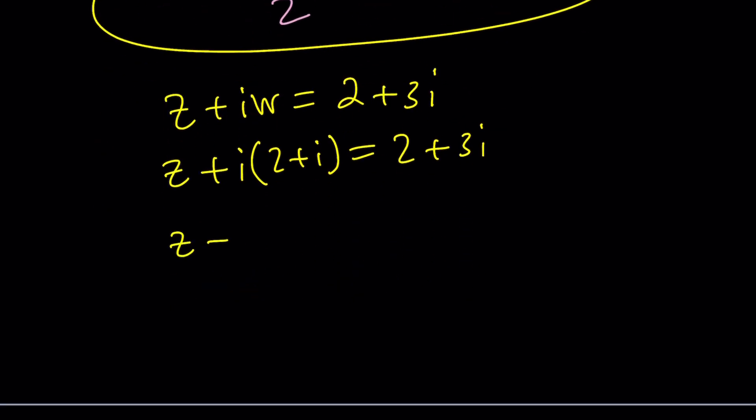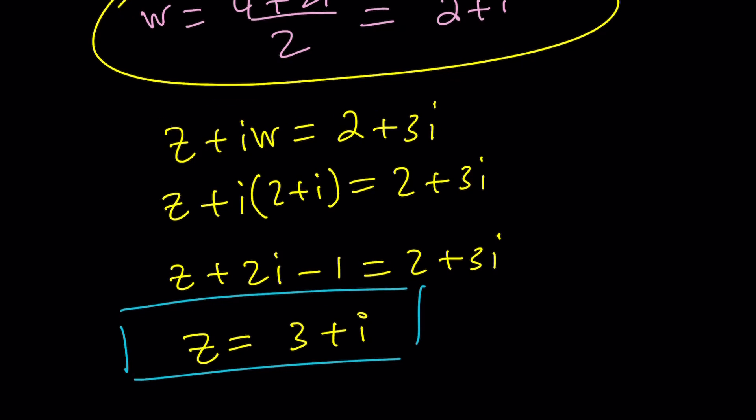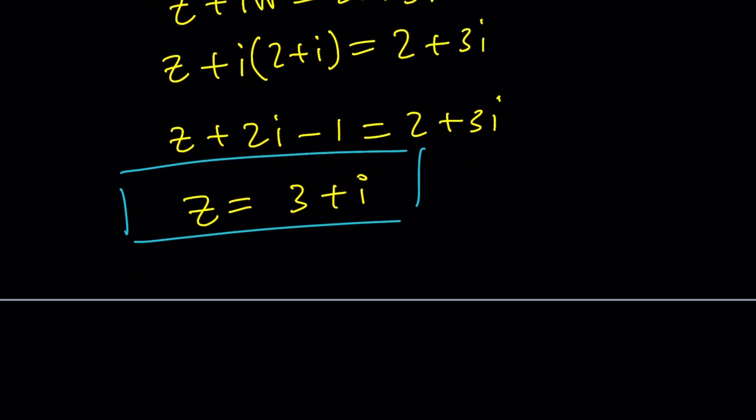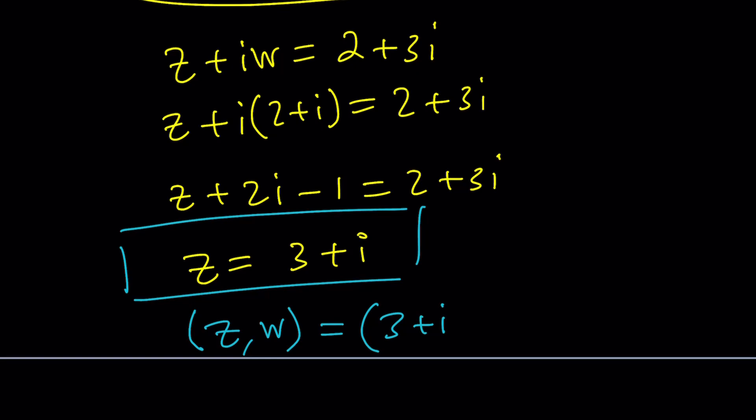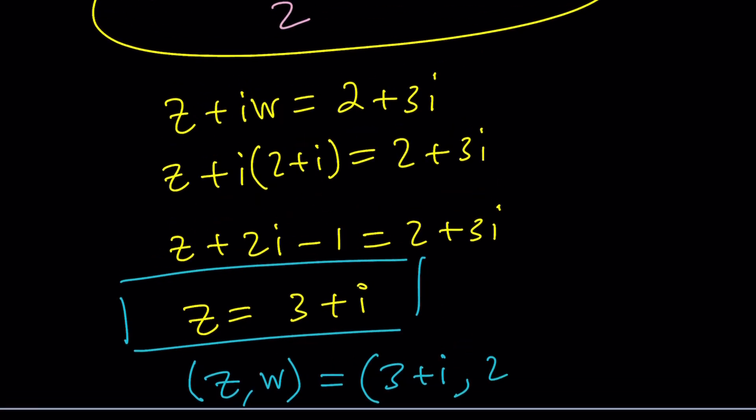Let's go ahead and simplify this. 2i plus i squared which is negative 1 equals 2 plus 3i. Now z is going to be 2 plus 1 and then 3i minus 2i is going to be 1i and that will be the value of z. So we do know that w is equal to 2 plus i and z is equal to 3 plus i. So again our ordered pair z comma w and I don't know why z goes first. Doesn't matter. It doesn't have to be alphabetical I guess. It's going to be 3 plus i comma 2 plus i.